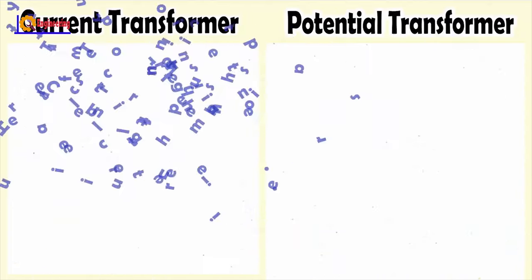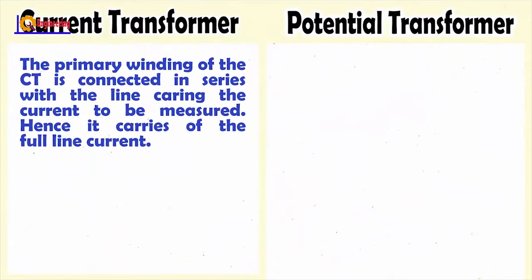The primary winding of the current transformer is connected in series with the line carrying the current to be measured. Hence, it carries the full line current.